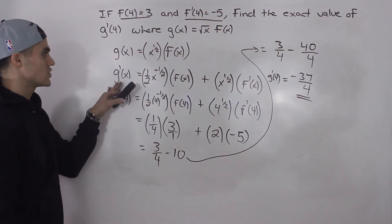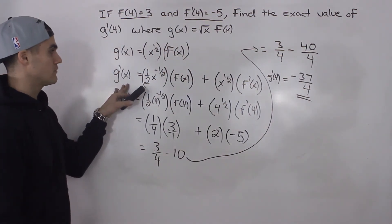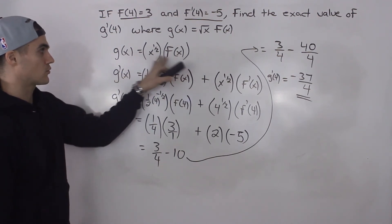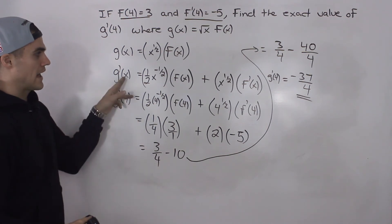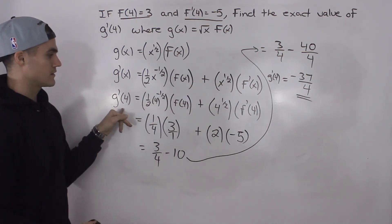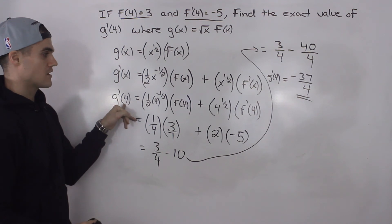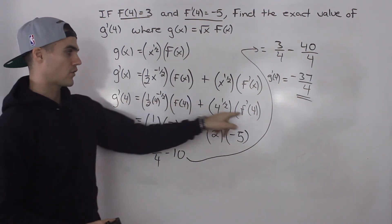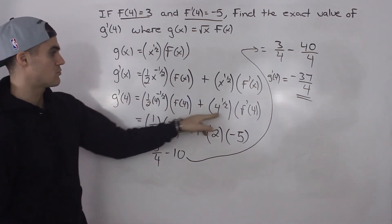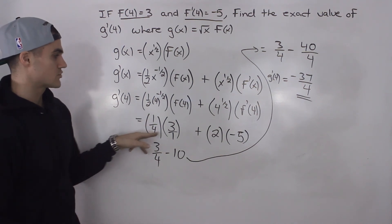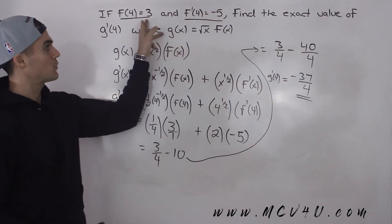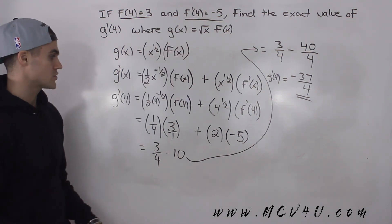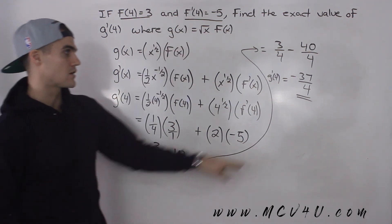So to summarize: we first found a general expression for the derivative of g(x) using the product rule, since we are multiplying two functions. Then, once we had the general expression, we plugged in x = 4. The algebraic terms we simplified ourselves, and for f(4) and f'(4) we used the values given in the question. The final answer is negative 37 over 4.